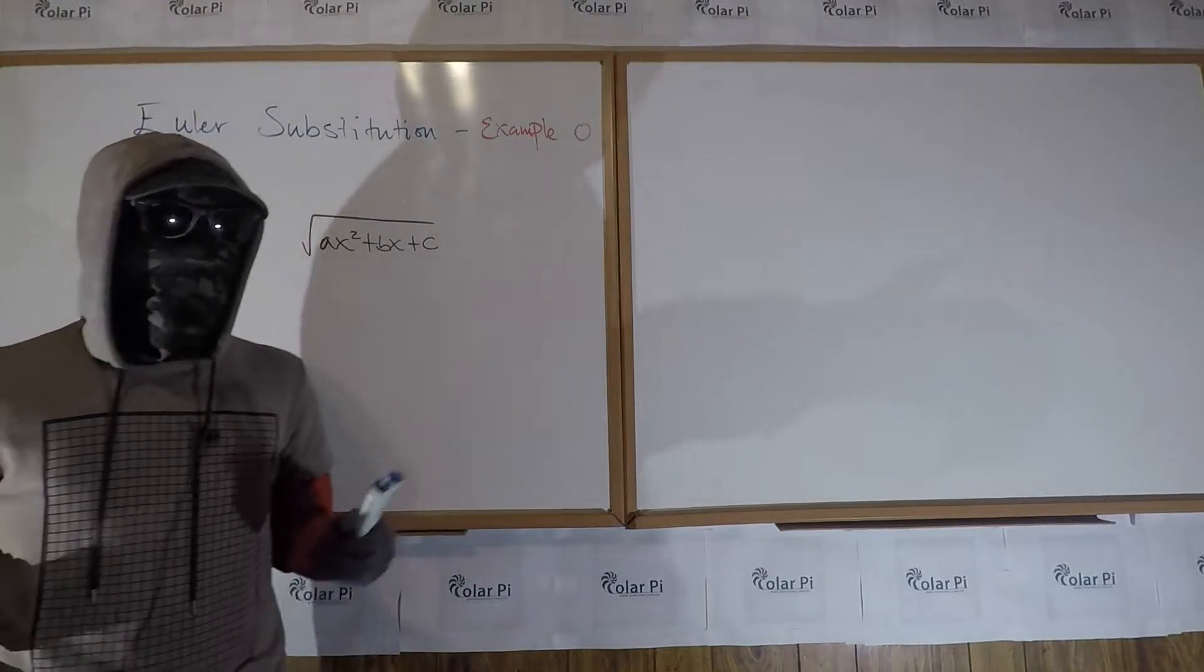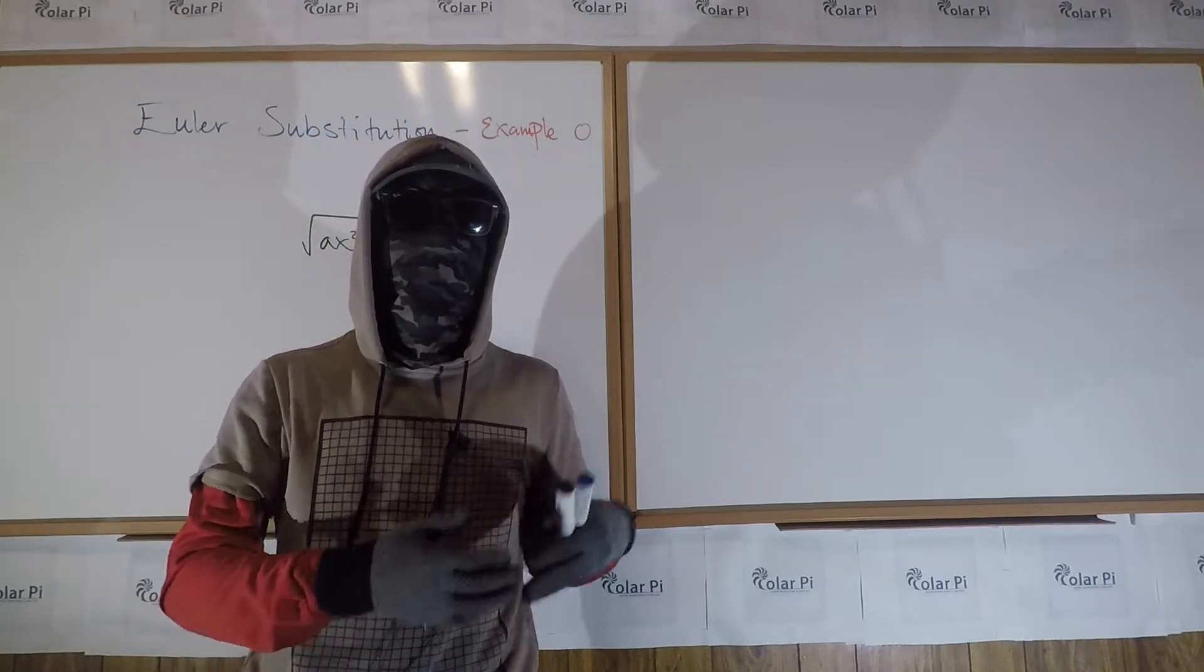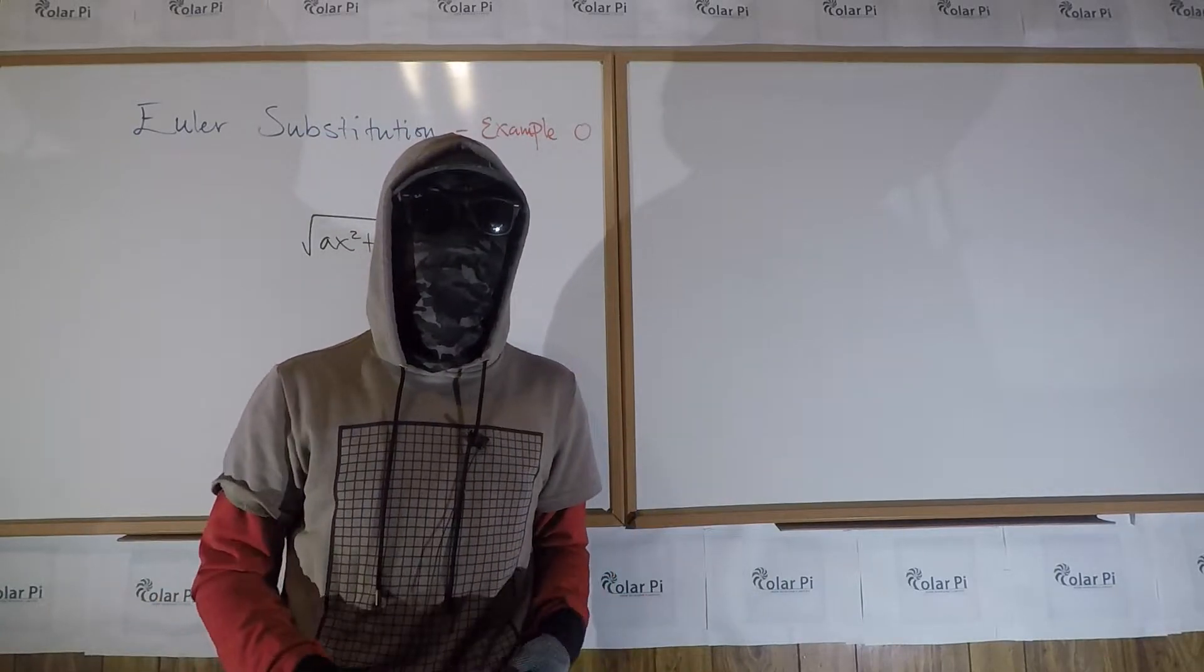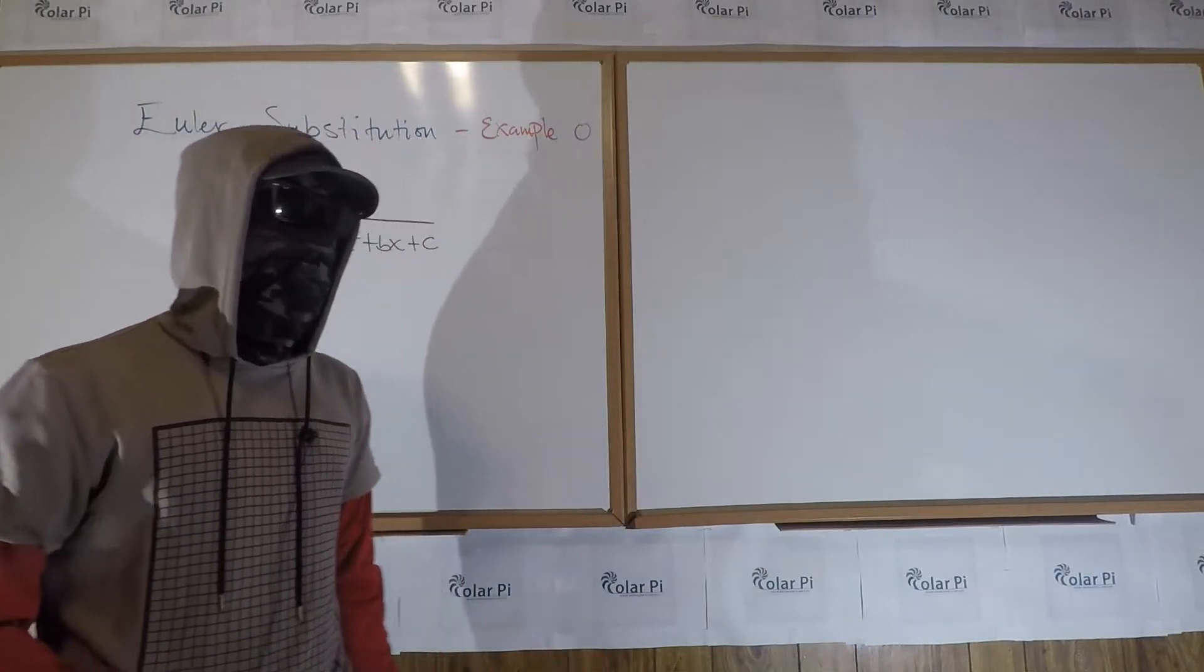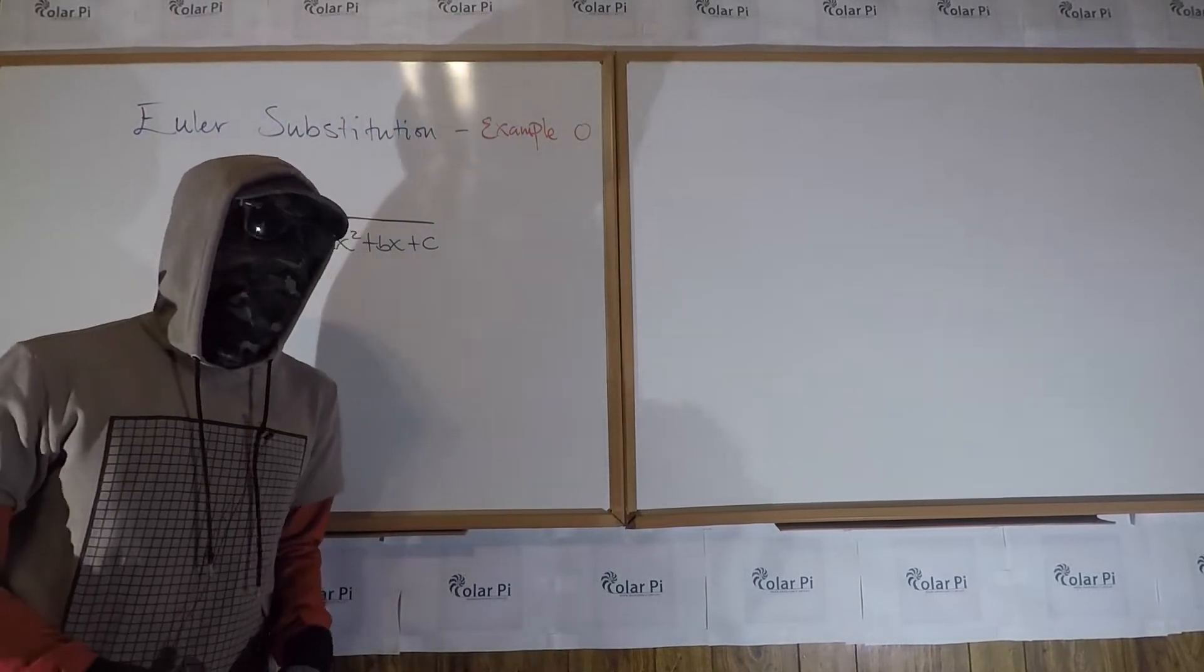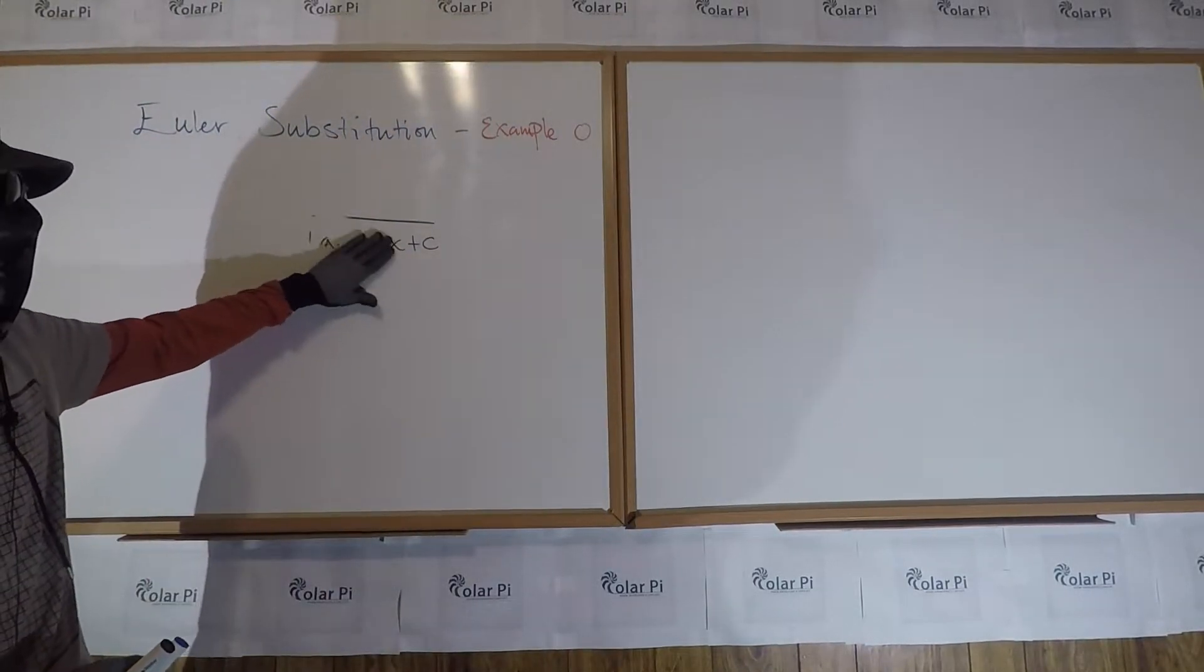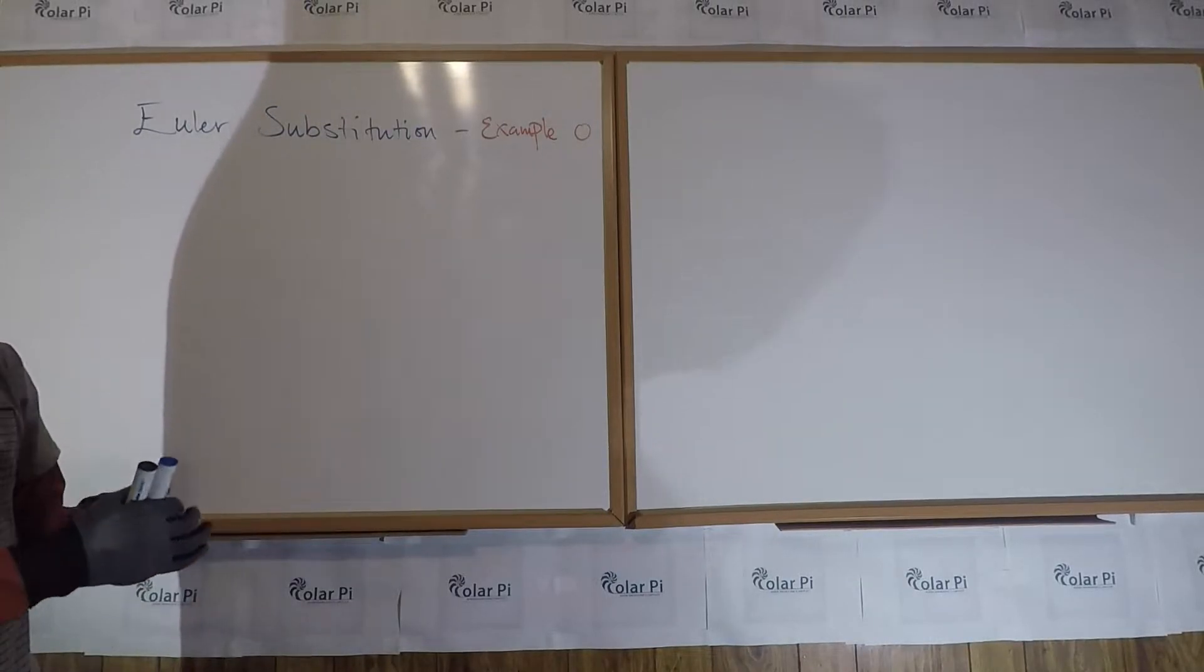Now, as this is example zero, we're just going to big picture understand why these three Euler substitutions are useful. In subsequent examples, one, two, three, and maybe additional examples, we're going to see these Euler substitutions in action. We're going to see them in action here also, but obviously not with numbers, big picture.